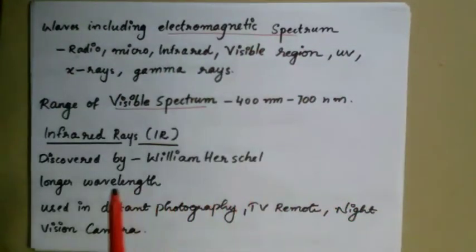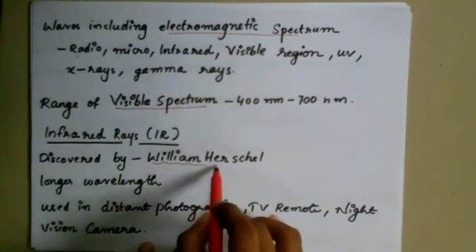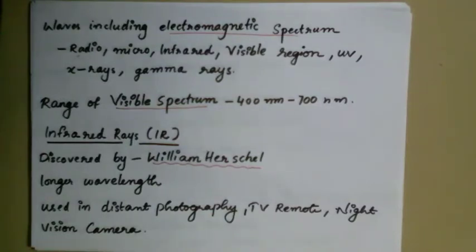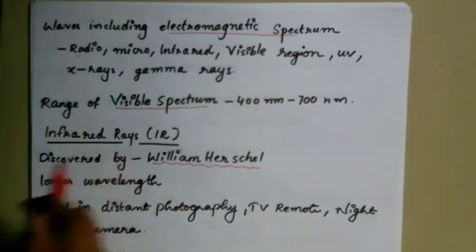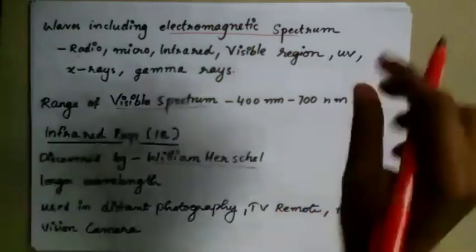Infrared rays were discovered by William Herschel. Infrared rays have a longer wavelength and are used in distant photography, TV remotes, and night vision cameras. Because of their properties, infrared rays are very useful in these applications.